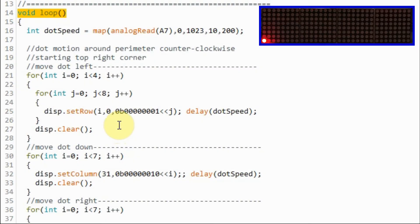In this next demonstration, we have an example of dot animation. By moving the dot around the perimeter of the module counterclockwise, starting from the top right corner. And the speed of motion is controlled by a potentiometer connected to analog input A7.